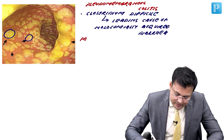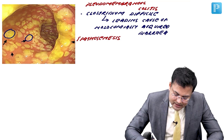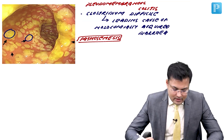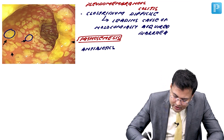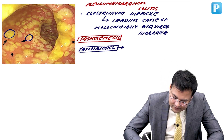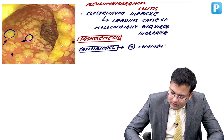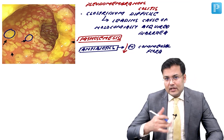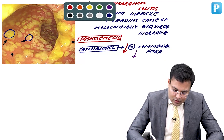The pathogenesis is related to use of antibiotics. One antibiotic commonly featured in exams is clindamycin. Due to antibiotic use, there is depletion of the normal conventional flora, leading to overgrowth of Clostridium difficile.